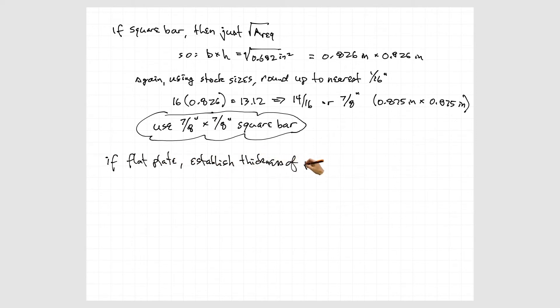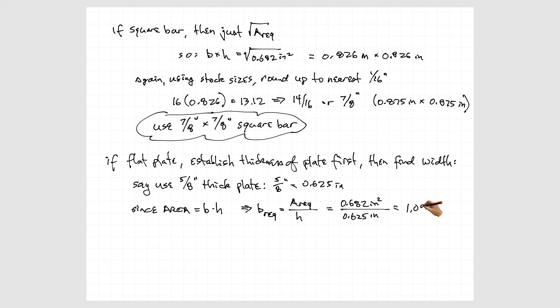If we do a flat plate, we would establish the thickness of the plate first, then find the required width. So we take our 5/8ths inch plate and that's 0.625 inches. The required thickness of that will be the required area divided by the width, and it comes out to 1.09 inches.